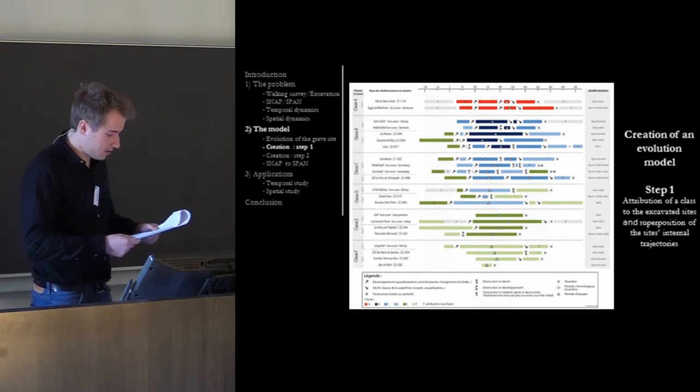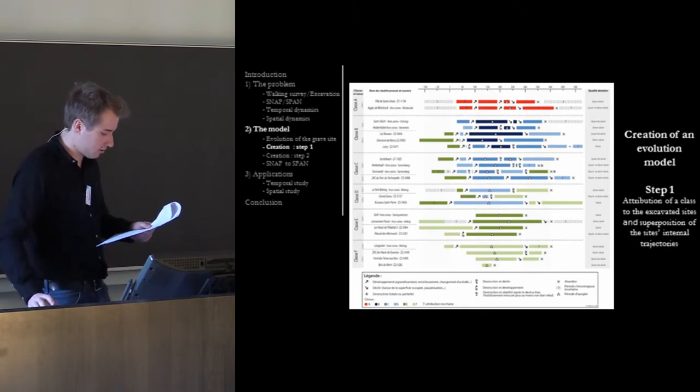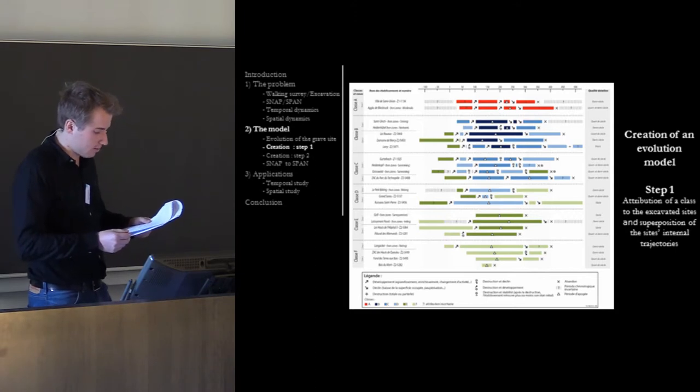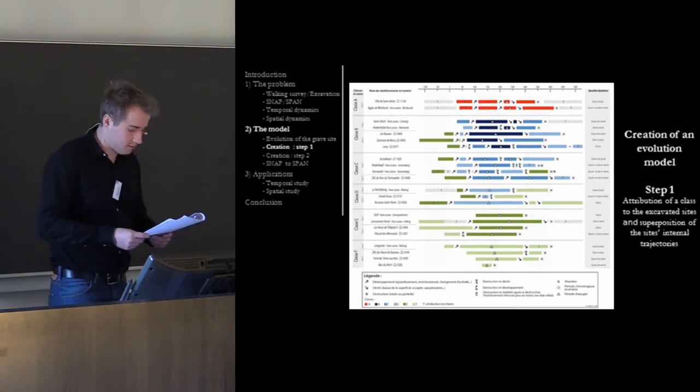Using this approach, we manage to perceive the typological trajectory of every site. With this, we can see that within a type, practically all sites follow the same typological trajectory. This shows that it's possible to realize a hierarchical evolution model for each of the classes of our typology and to apply it to the habitats discovered in survey.